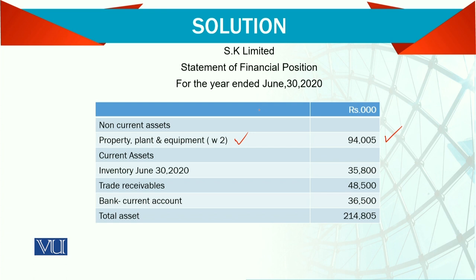Under current assets, we have inventory. This inventory is the end-of-year inventory, not the beginning, because the cost of goods sold has already been prepared — meaning the opening inventory has already been consumed, and what remains is the closing inventory. Then trade receivables, the bank account, and any cash in hand are put together as one figure. The detail — petty cash, cash in hand, cash equivalents — is shown separately, but combined into one figure here.